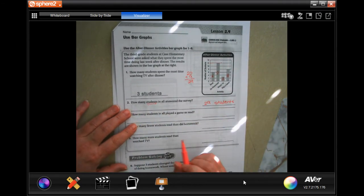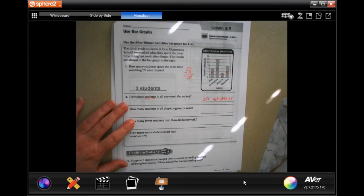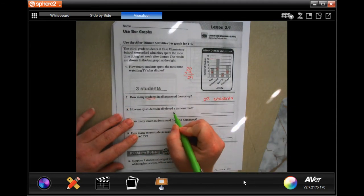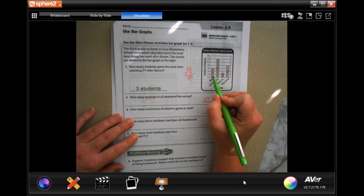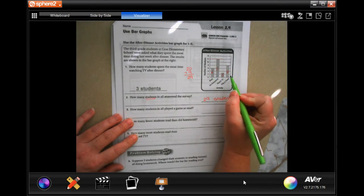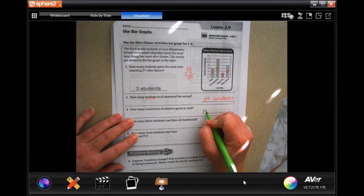How many students in all played a game or read? Well read was six and played a game was eight. Well eight plus six, 14, and it's going to be labeled students.